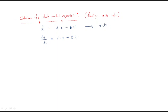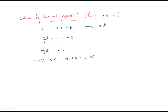In control systems, whenever differential terms are available, we apply the Laplace transform. Applying the Laplace transform to the above equation, we get: s·X(s) minus x(0) on the left side. Whenever we differentiate, x(t) becomes X(s) in the s-domain, and we must subtract the initial value x(0). The right side becomes A·X(s) plus B·U(s).